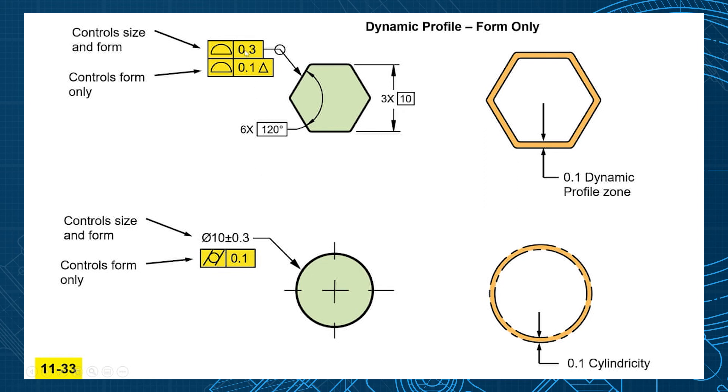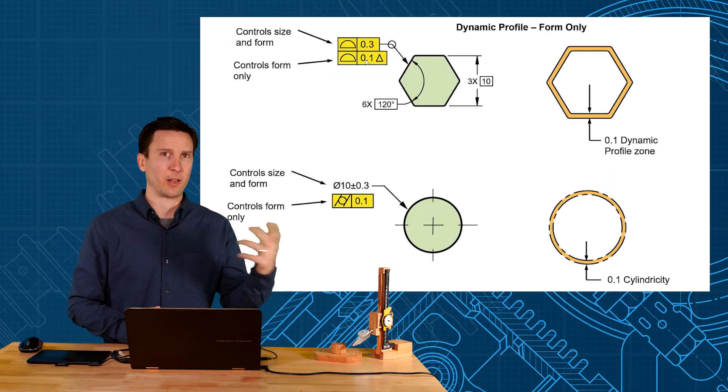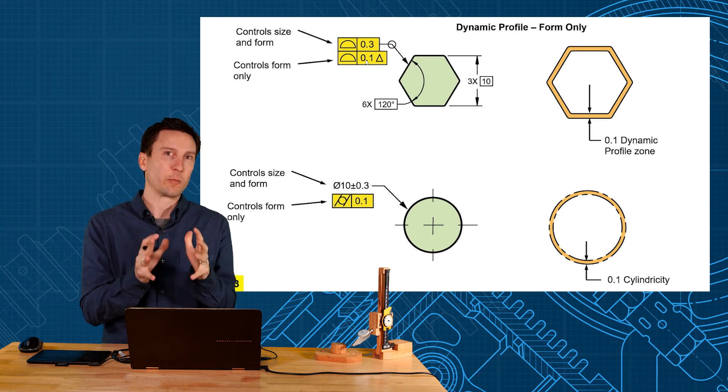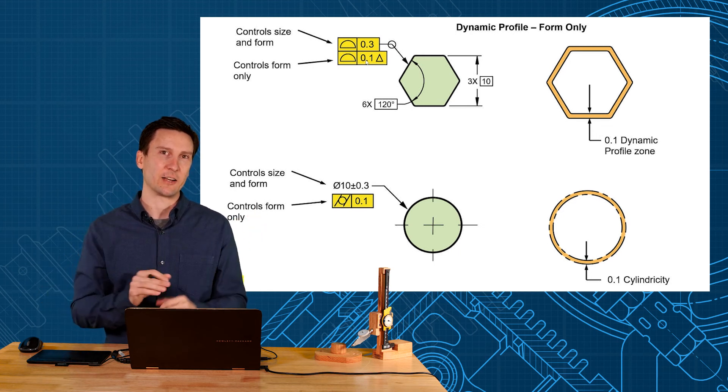So the same thing here. You can have a plus or minus 0.3 on your size but it better be a nice shape. So this profile tolerance is becoming a hexagonicity or a triangularity or a butterflyicity. You can make it any shapeicity that you want here because you're controlling the form of that feature unlocking that size.